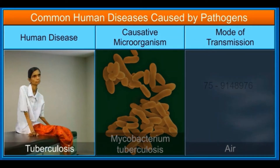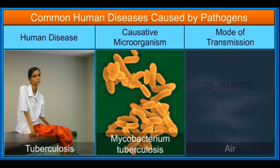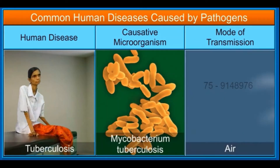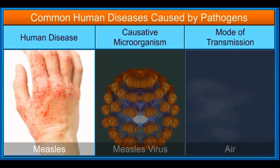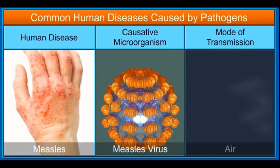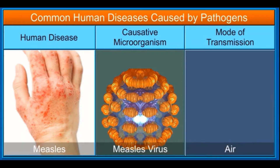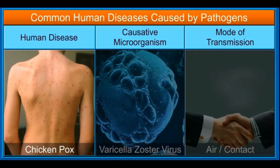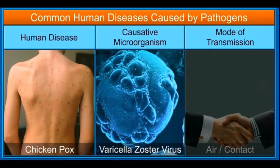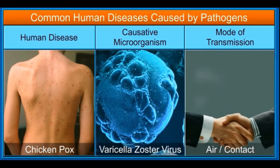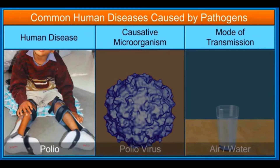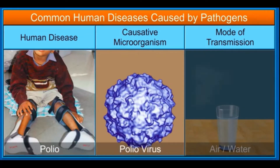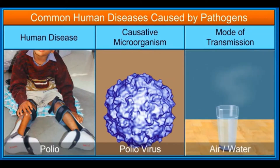Tuberculosis is caused by Mycobacterium tuberculosis and transmitted via air. Measles is caused by the measles virus and the disease is transmitted through air. Chicken pox is caused by the varicella zoster virus and transmitted through air and physical contact. Polio is caused by the polio virus and transmitted via air and water.